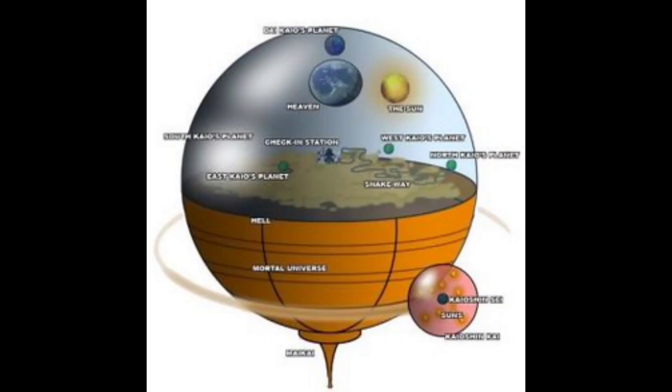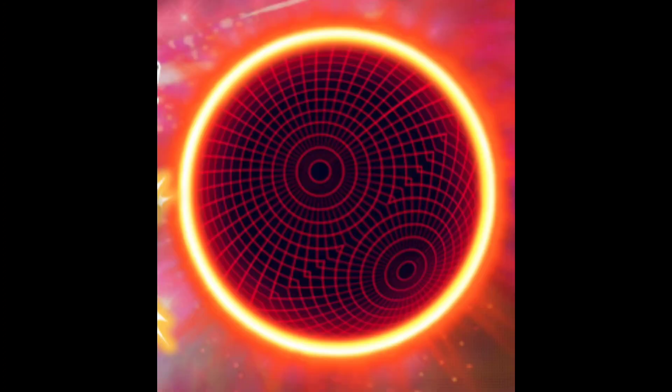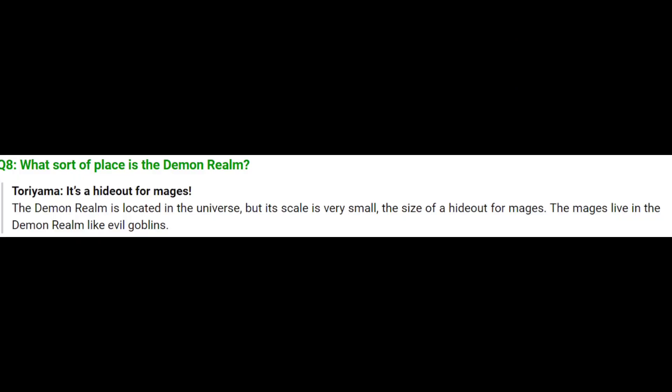But before we go to the afterlife, we have to look at the lowest part of the macrocosm: the demon realm. The demon realm runs on different physics than the normal universe, since magic is more dominant than science, and it's on the other side of the universe — though its size is quite inconsistent, since it's mentioned to be a small hideout by Toriyama, yet it's supposed to be on the other side of the universe.